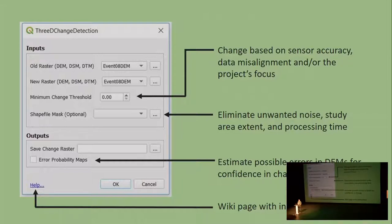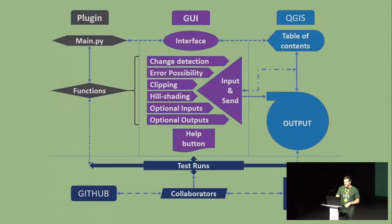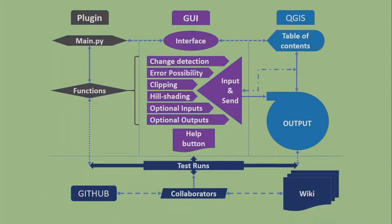We also have optional error probability maps, which we believe are somewhat unique, that show you where possible errors are when you're generating DEMs from point clouds via photogrammetry and LiDAR data. And we have a help button that links to a wiki page on the GitHub page, which explains everything and provides instructions. This is a quick methodology overview of the GUI and all the functions within the plugin.